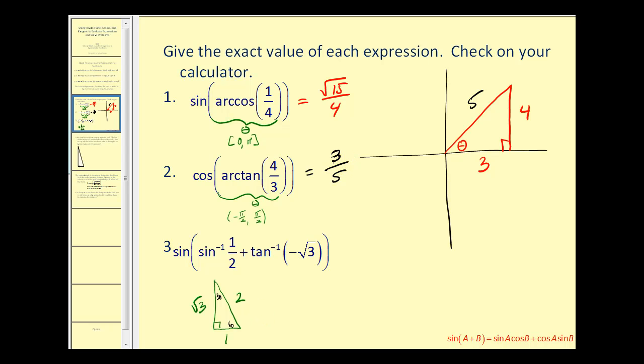Okay, number three is a little bit different. We want to find the sine of the quantity arcsin(1/2) plus arctan(-√3). Arcsin of positive 1/2. What angle has a sine function value of 1/2? We can see from this 30-60-90 right triangle that would be 30 degrees. So we'll have the sine of 30 degrees plus,